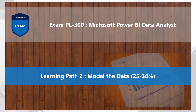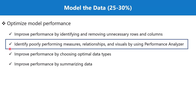Welcome back to the PL300 exam preparation series exploring the second learning path: model the data. In this video we are going to explore the topic 'identify poorly performing measures, relationships and visuals by using performance analyzer,' which is part of the section 'optimize model performance.' We did not cover this topic initially because we had not covered the visualization portion while talking about modeling of data. Now that we have covered relationships, measures, and visuals, we need to know how the performance analyzer can be used to identify all of these things.